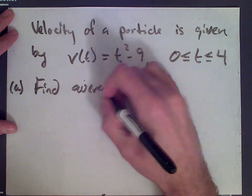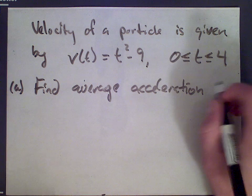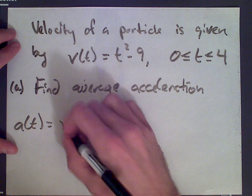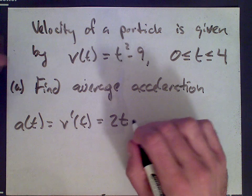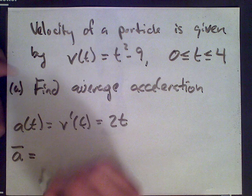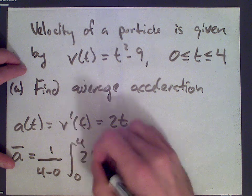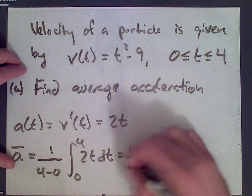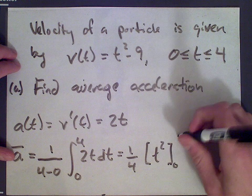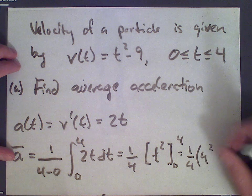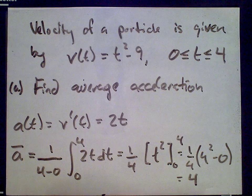Find the average acceleration. The acceleration is given by the derivative of the velocity, so let's find that first — that's 2t. Then to find the average acceleration, denoted ā, on this interval, it's 1 over (4 minus 0) times the integral from 0 to 4 of 2t dt. This equals 1/4 of t² evaluated from 0 to 4, which is 1/4 of (16 minus 0) = 4. So the average acceleration is 4.